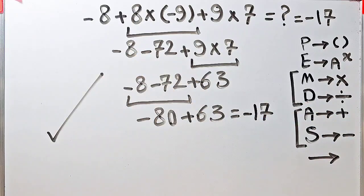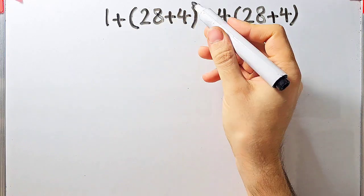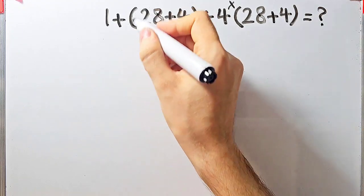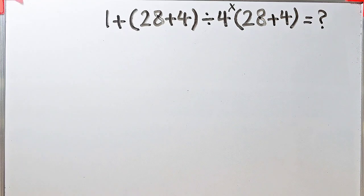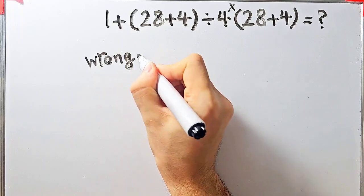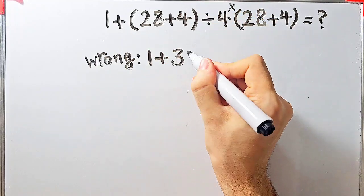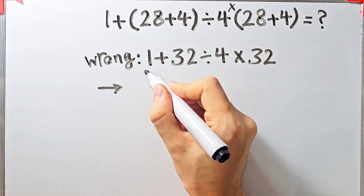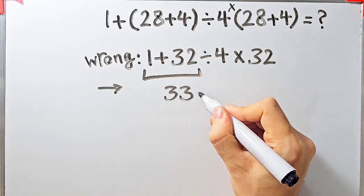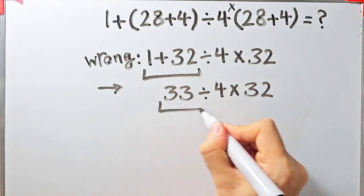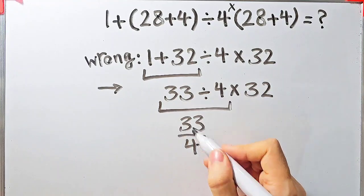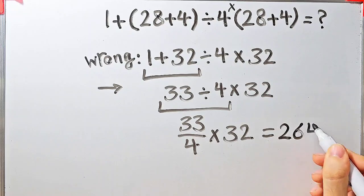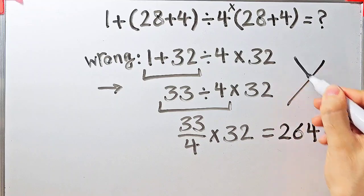Let's solve another question. We have 1 plus open parenthesis 28 plus 4 close parenthesis, divided by 4, then times open parenthesis 28 plus 4 close parenthesis. Some people solve this incorrectly by starting from the left: 1 plus 28 plus 4 equals 32, divided by 4, then times 32. They get 33 divided by 4, which is 33 over 4, times 32, giving 264. But this answer is definitely wrong.